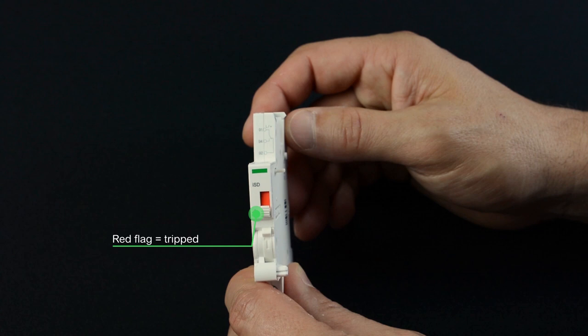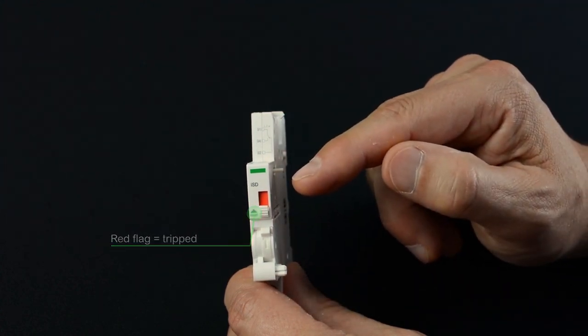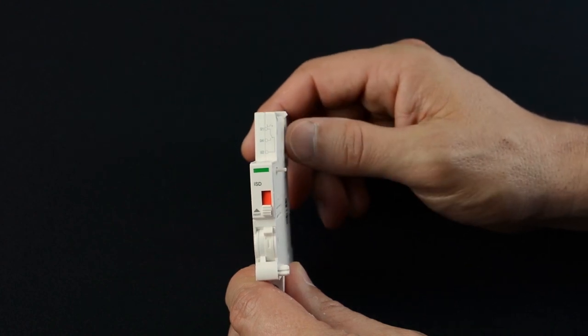Locally, on your switchboard, a red flag provides a quick indication which Acti9 circuit breaker has tripped.